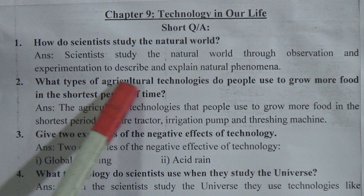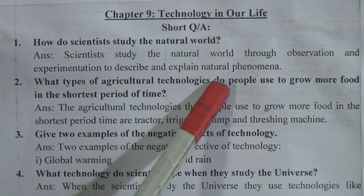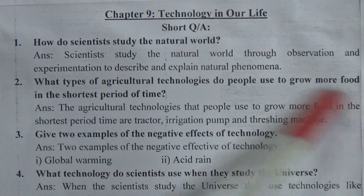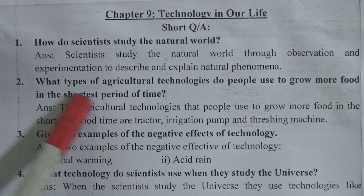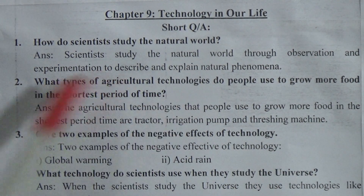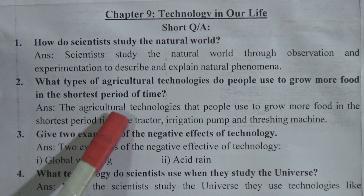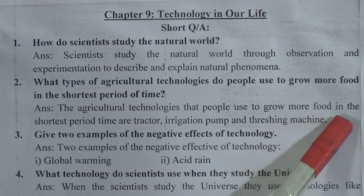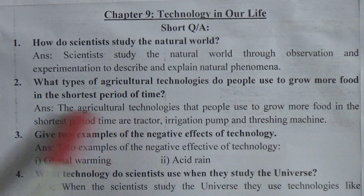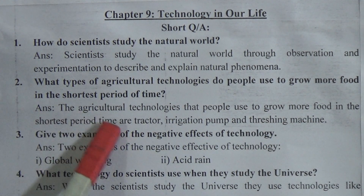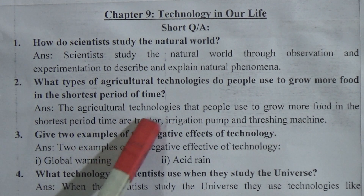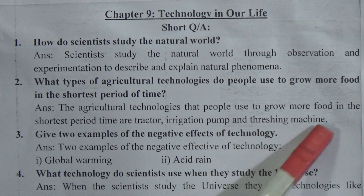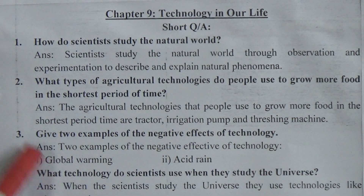Question 2: What type of agricultural technology do people use to grow more food in the shortest period of time? Answer: The agricultural technologies that people use to grow more food in the shortest period of time are tractors, irrigation pumps, and threshing machines.